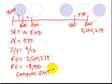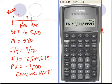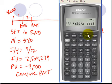So let's go ahead and do this computation real quickly here. All right, so in order to do this computation, we want 540 to be in. We want 9 divided by 12. Whoops, we're going to set this to end in just a second. 9 divided by 12 to be I slash Y. Let's go ahead and set this to end. So second, BGN. And now second, set. All right, now this is set to end. And I always hit the enter button just to be sure.